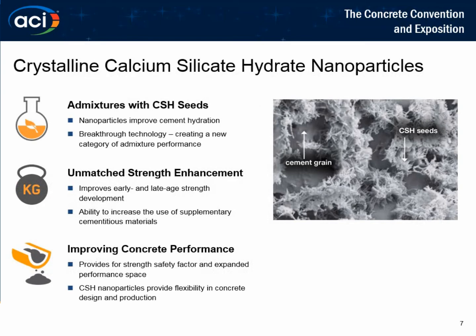The benefits of improving cement hydration are numerous. Enhancing cement hydration is critical to increasing general strength development. The use of these CSH particles provides unmatched strength performance and is creating a new category of admixture performance. These CSH nanoparticles provide the opportunity for mix optimization without strength loss, and also provide the ability to increase supplementary cementitious materials, improving the environmental sustainability and footprint of a structure.